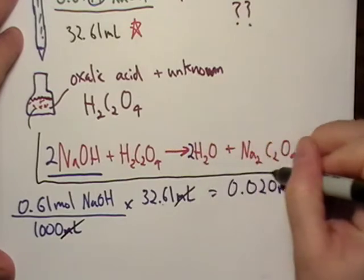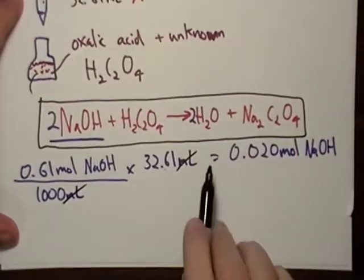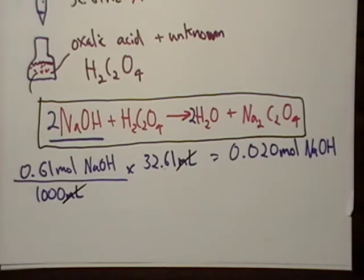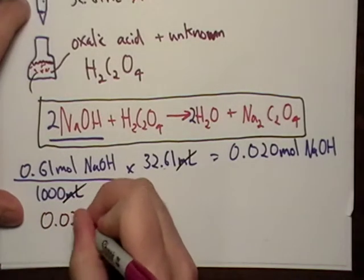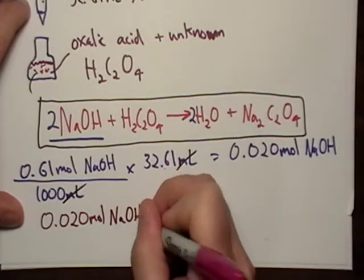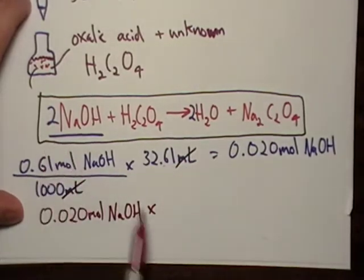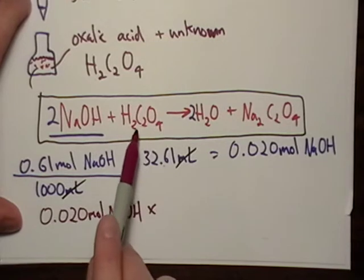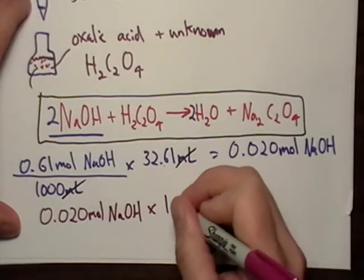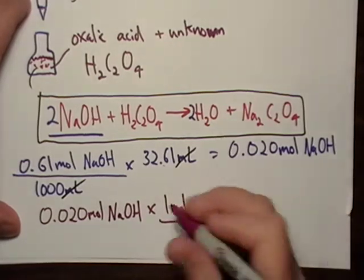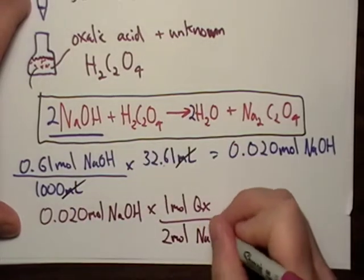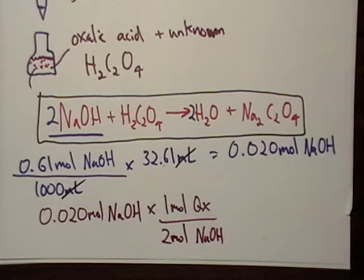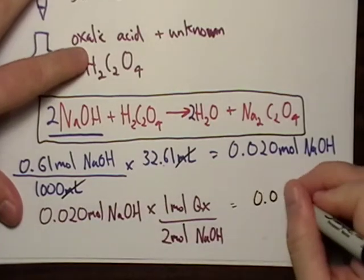So going back to our little chemical reaction right here. I have 0.020 moles of NaOH sodium hydroxide, and if we look at our chemical reaction, the sodium hydroxide combines with the oxalic acid in a two-to-one ratio. So we got one mole of ox, I'm just going to abbreviate, to every two mole of NaOH sodium hydroxide. So we'll just divide that by two.